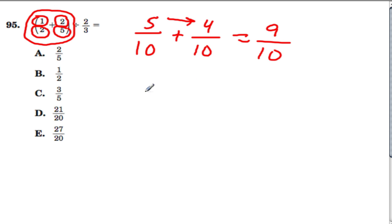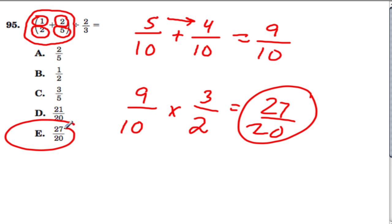So we have 9 tenths divided by 2 thirds is the same thing as multiplying by the reciprocal, 3 over 2. And we get 27 over 20. That's our answer for this problem.